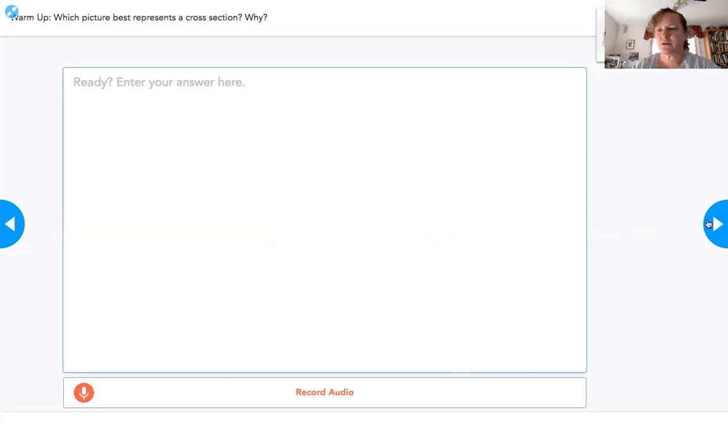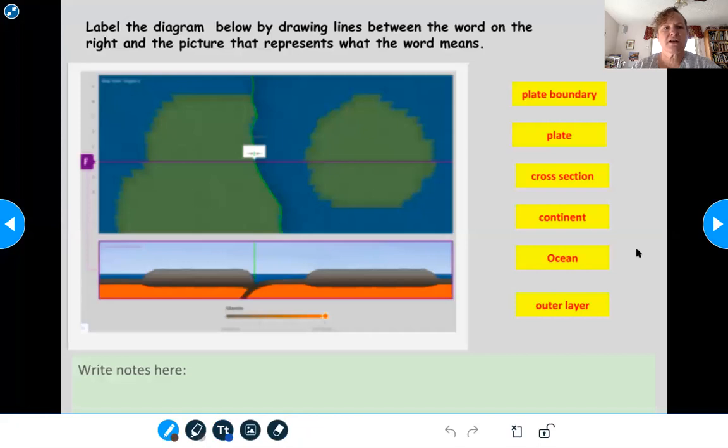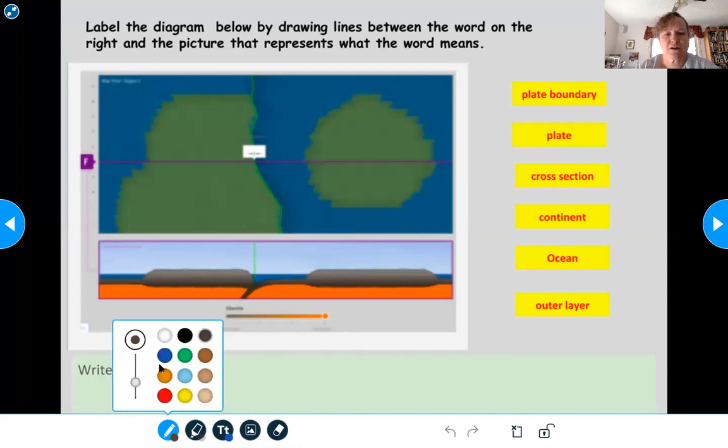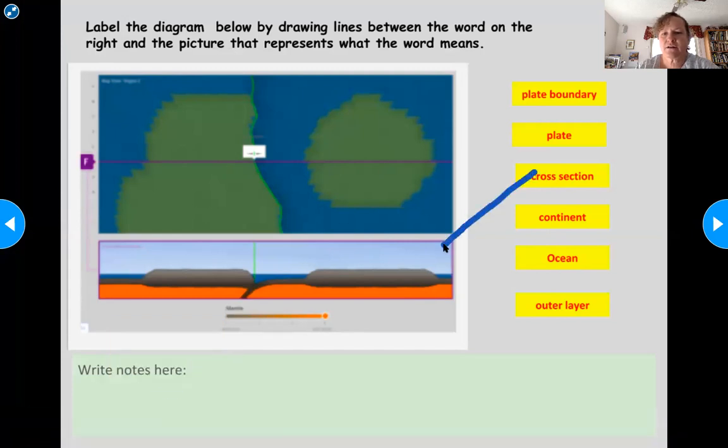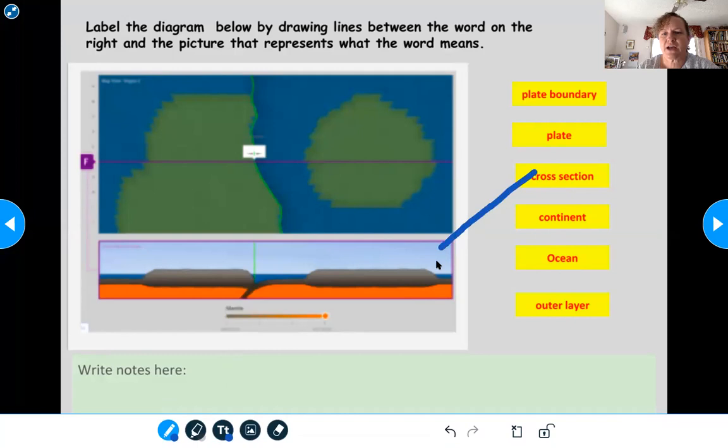So you're going to answer that. Remember you can record audio if you want, you can record your voice. And then label the diagram below by drawing lines between the words on the right and the picture that represents what the word means. So notice how there's cross section here. So I can take a marker and I can draw a line between cross section and the cross section.